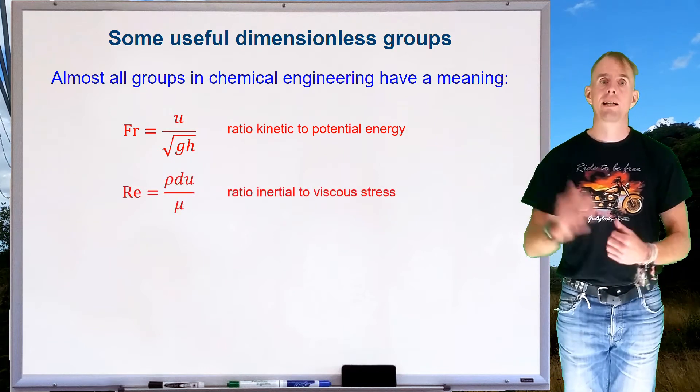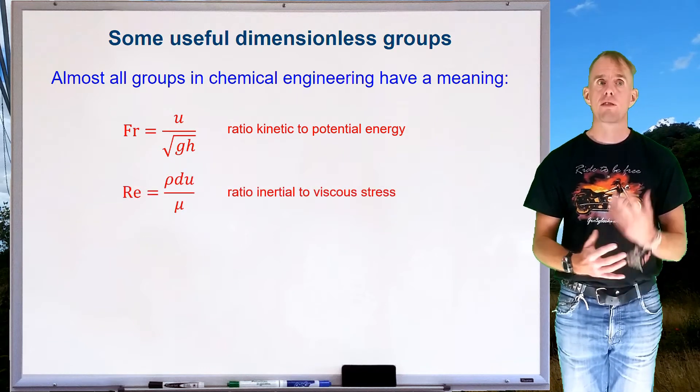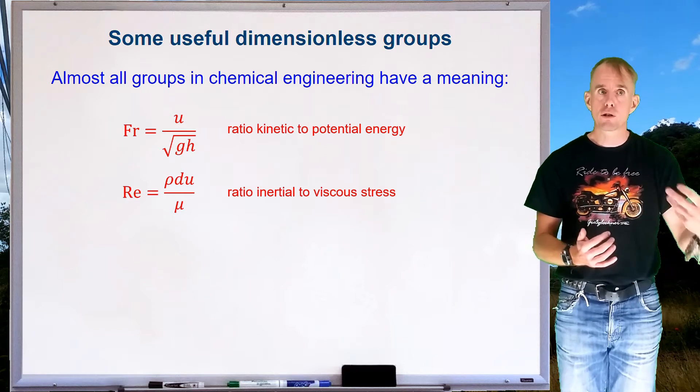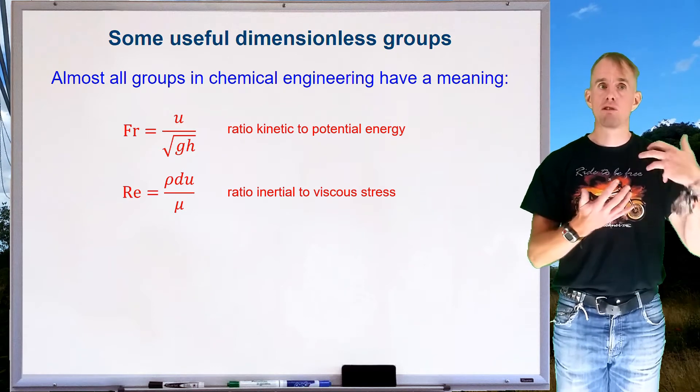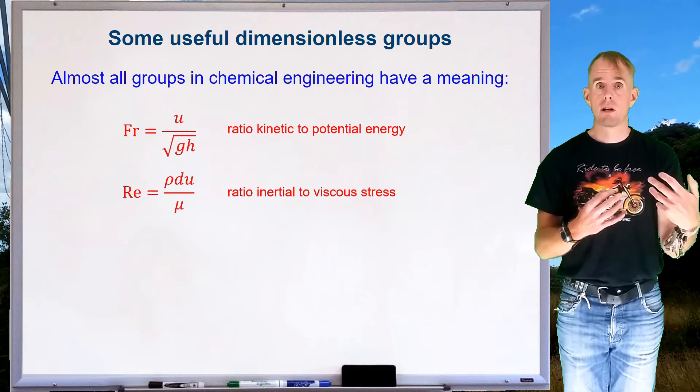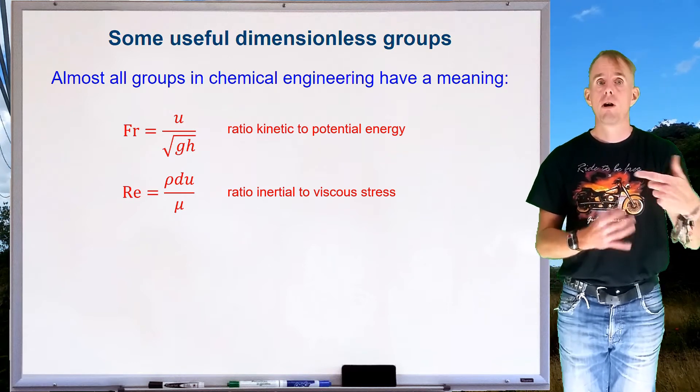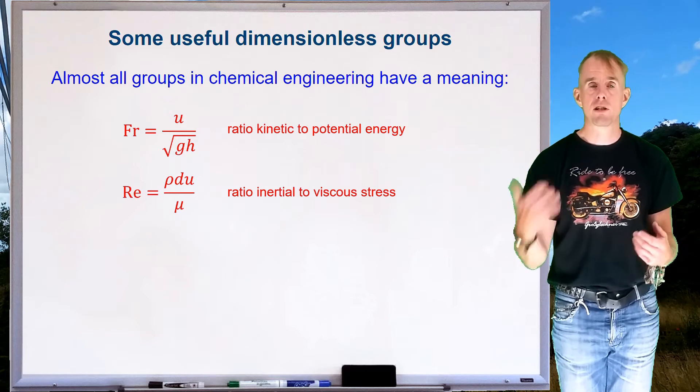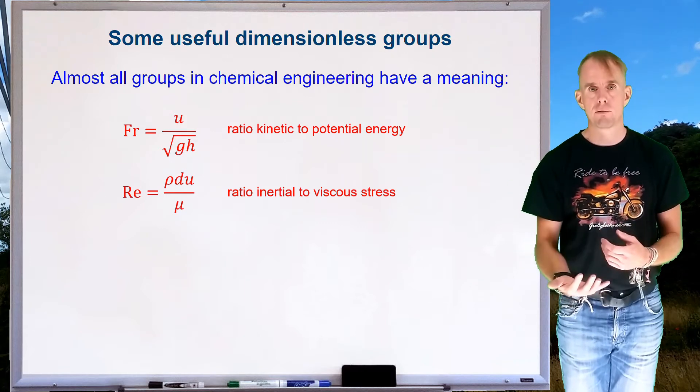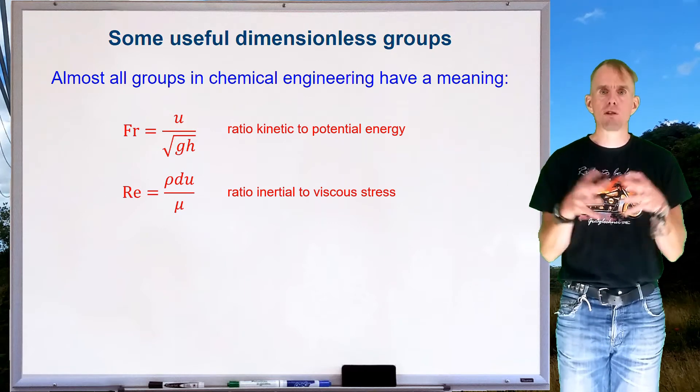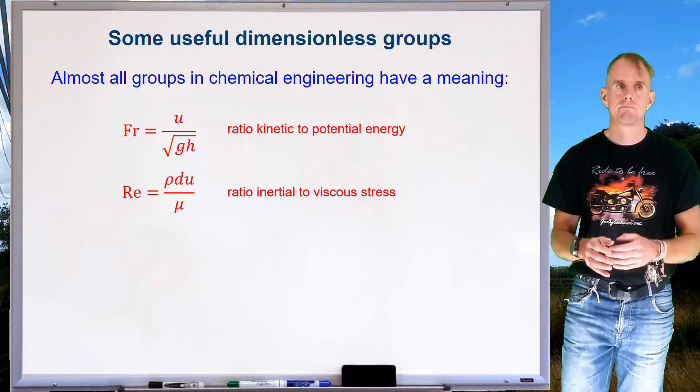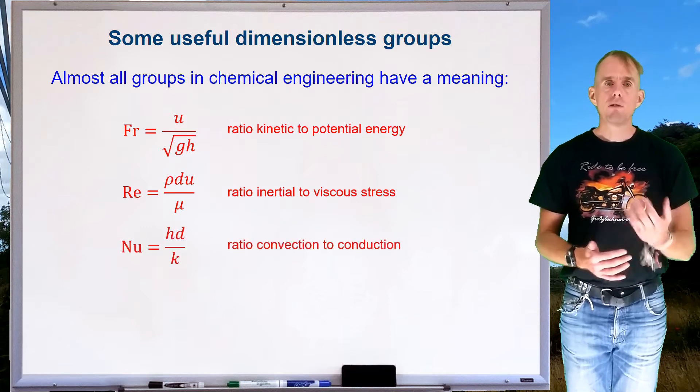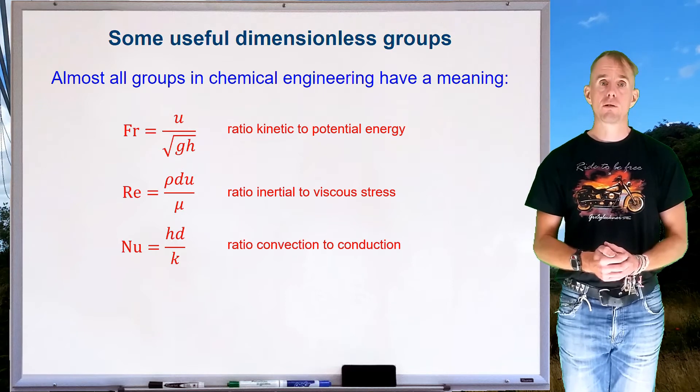In your fluid mechanics course, you will have already come across the Reynolds number. It's the ratio of inertial stress to viscous stress. When inertial stress is greater than viscous stress, you have turbulent flow. When viscous stress is greater than inertial stress, you have laminar flow. And again, we can get a physical picture of what's actually going on in a given scenario.